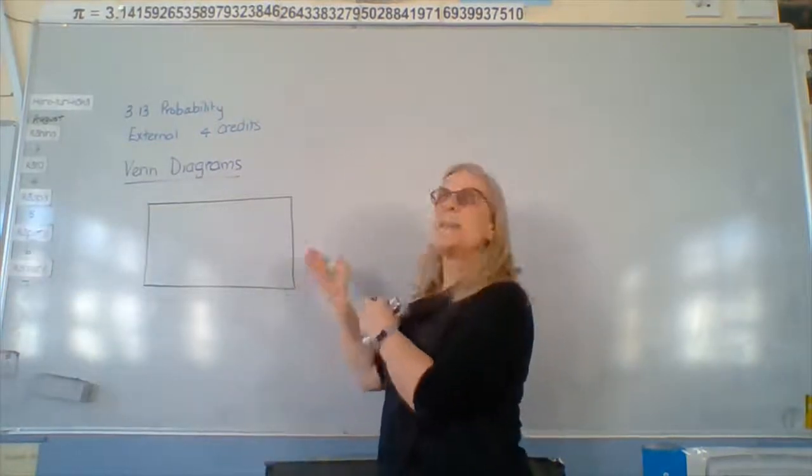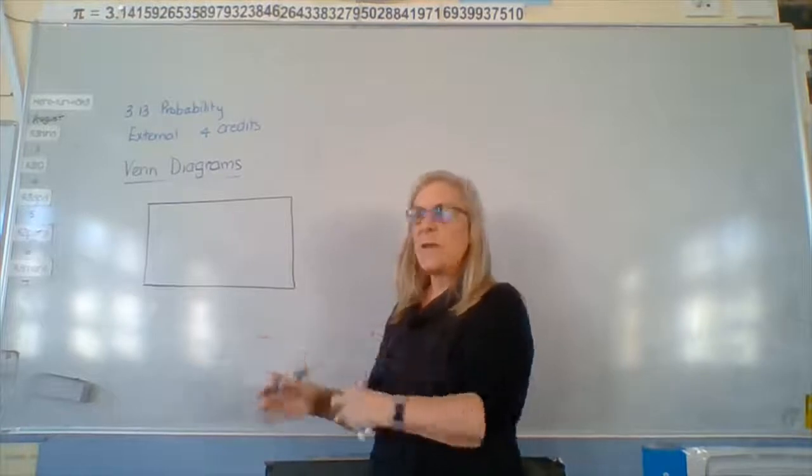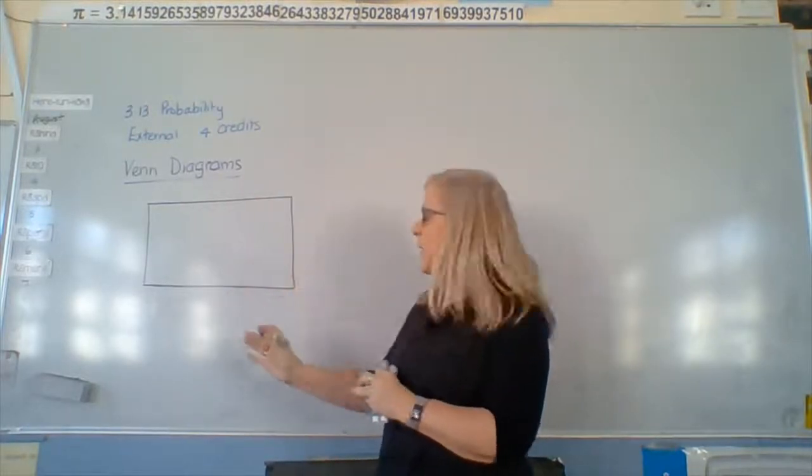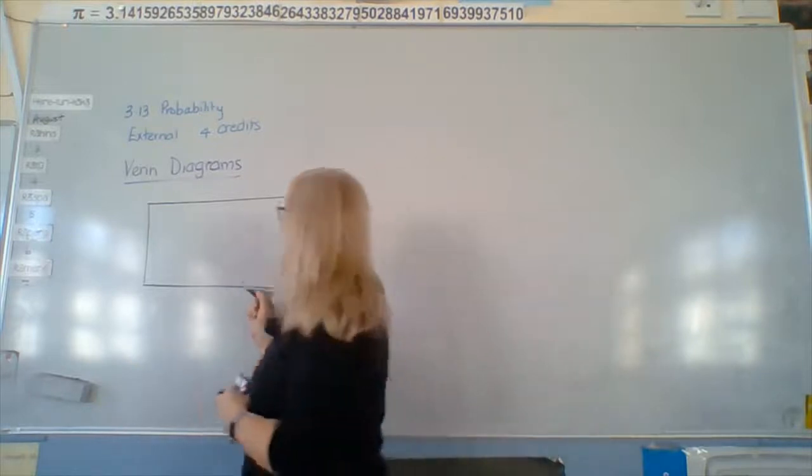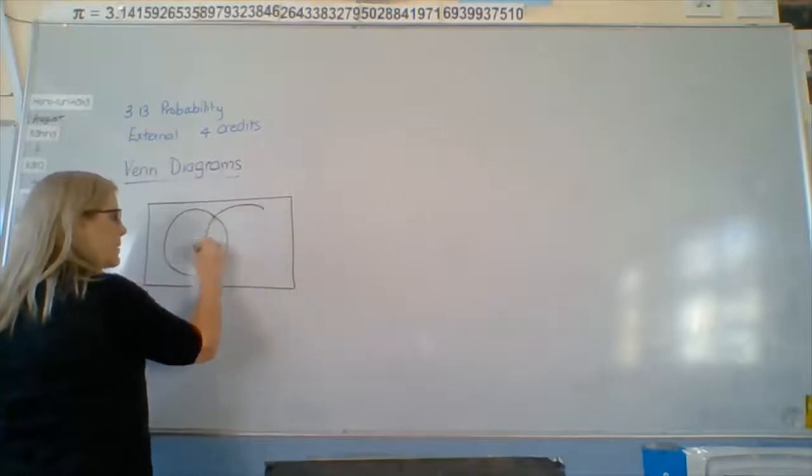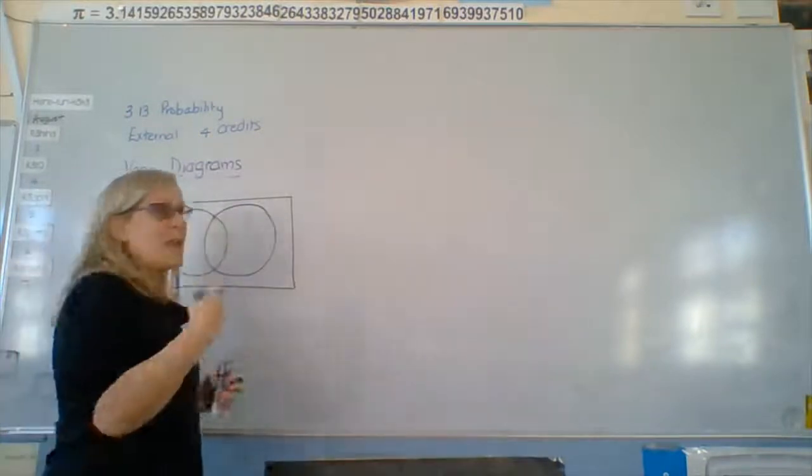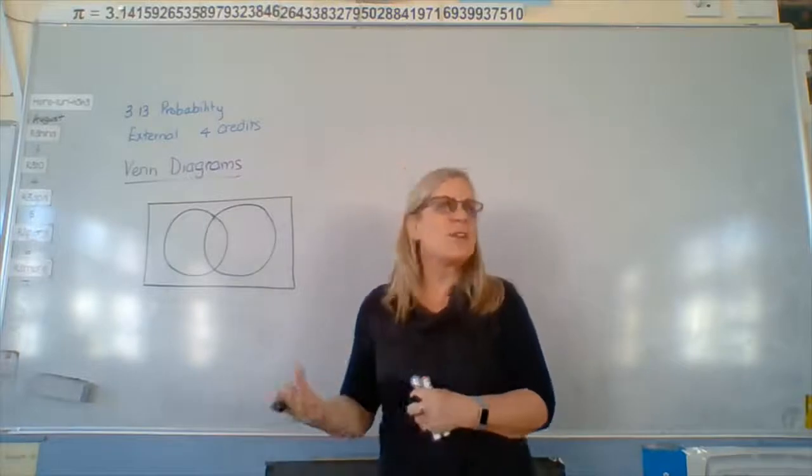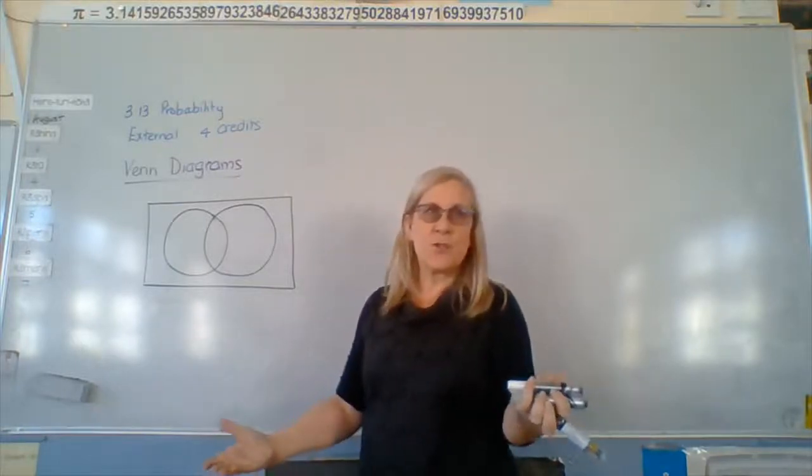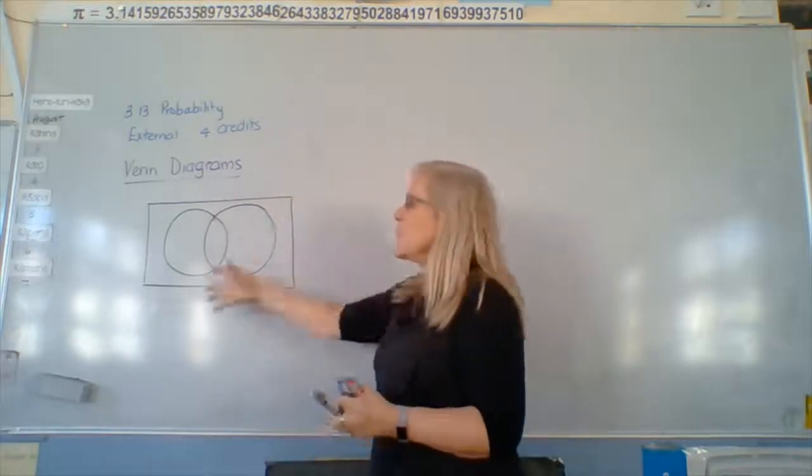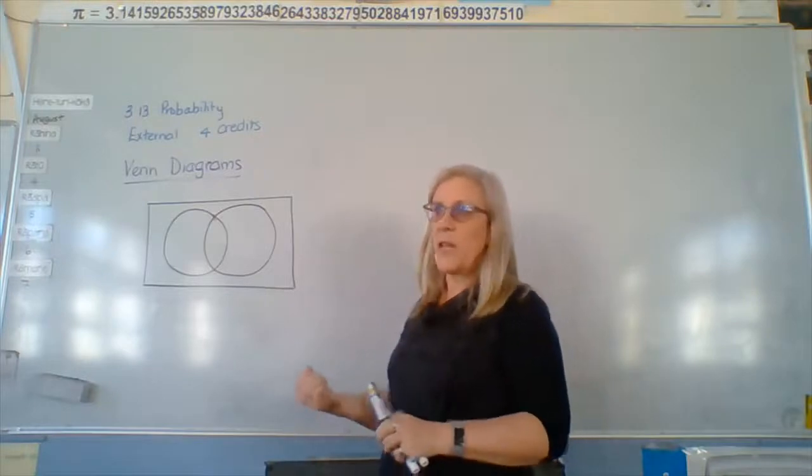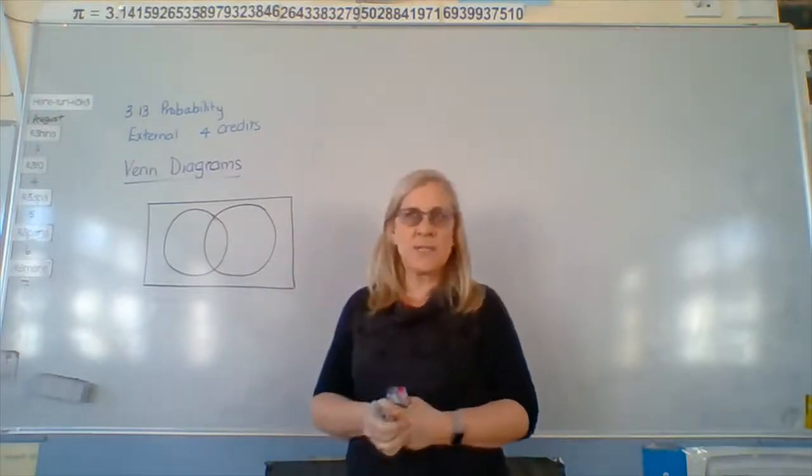That box is everything. All right. Universal set. Everything that exists as far as what we're talking about exists inside that box. One circle could be interesting not. The only interesting in that is that you belong to the circle or you don't belong to the circle. All right. Once we get up to two circles or in this case this year, you'll be dealing with three circles, more than likely. Then we're getting into the interesting stuff.